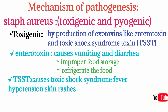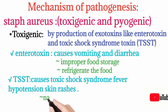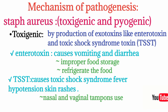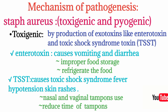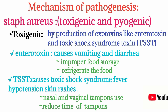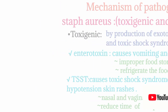Toxic shock syndrome toxin (TSST) is associated with nasal and vaginal tampon use. Since the nasal cavity and vagina are common sites of Staph aureus, tampon use predisposes to toxic shock syndrome. Prevention involves reducing the duration of tampon use. These are the two important toxins produced by Staph aureus.